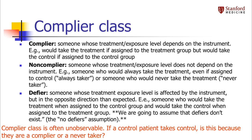In fact, in order to make our estimates, we actually have to assume that there are no defiers. That's usually a reasonable assumption. Note that complier class is often unobservable. Just because a control patient takes the control doesn't mean they're a complier — they might have taken the control regardless. So we can't usually identify these classes, but we need to understand them theoretically to derive our estimate.